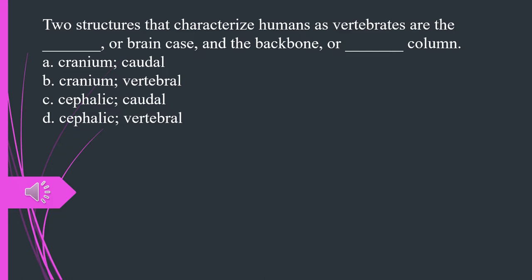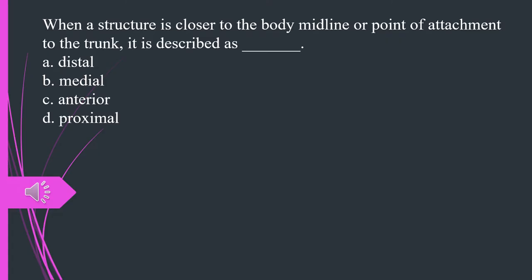Two structures that characterize humans as vertebrates are the what, or brain case, and the backbone, or what column. A. Cranium, caudal. B. Cranium, vertebral. C. Cephalic, caudal. D. Cephalic, vertebral. The answer is B. Cranium, vertebral.